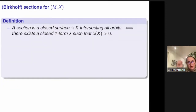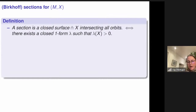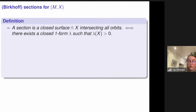Now let me talk about sections. I'll start with a real section and not a Birkhoff section. If you have a three-dimensional flow without fixed points, a section for me is a closed surface that is transverse to the vector field and intersects all the orbits. If you have such an object, you have a well-defined return map on the surface, and from this return map you can build a fibration over the circle where the fibers are basically the surface. For a vector field to have a section is very restrictive because the three-manifold must fiber over the circle.